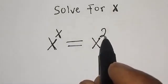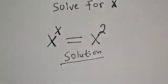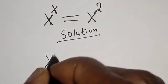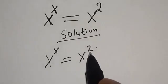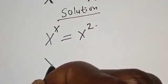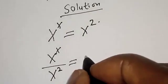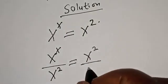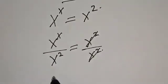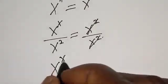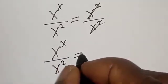Solution: we have the given equation s raised to power s is equal to s square. Now let's divide both sides by s square. We have s raised to power s divided by s square is equal to s square divided by s square. This will cancel, and the left hand side becomes s raised to power s divided by s square, which is equal to one.